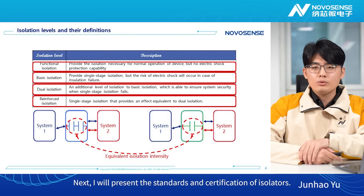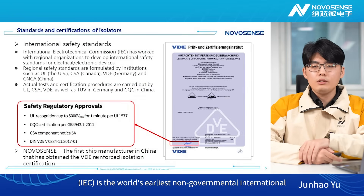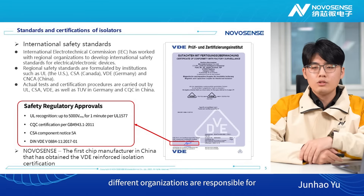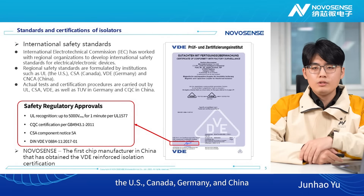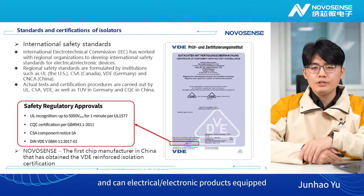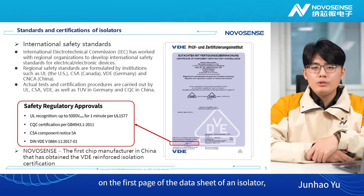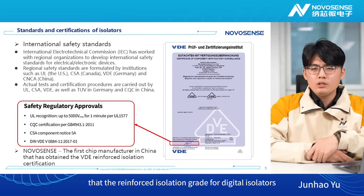I will now present the standards and certification of isolators. The International Electrotechnical Commission, IEC, is the world's earliest non-governmental international electrotechnical standardization organization. IEC works with organizations in many regions to formulate international safety standards for electrical and electronic devices. In different regions, different organizations are responsible for developing regional standards — for example, the US, Canada, Germany, and China have their local standardization institutions. Only after passing the regional standards can isolators be legally put into commercial marketing. It is noted that the reinforced isolation grade for digital isolators was mainly proposed by VDE and promoted as an international standard by IEC.